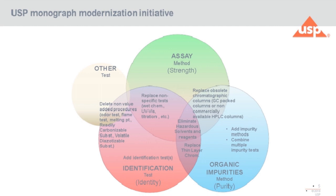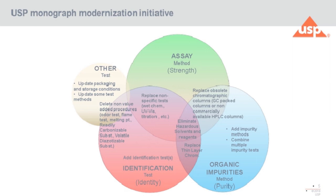For other tests and identification tests, because we are making changes in organic impurities, there are other tests that are no longer value-adding to the documentary standard. For example, some organoleptic tests, plain tests, and tests that require subjective determination by the users — we try to eliminate them and move toward instrumental methods of analysis. For other tests, we do updates, for example on packaging and storage conditions, so that they are specific. This is the whole scheme in terms of the monograph modernization initiative.